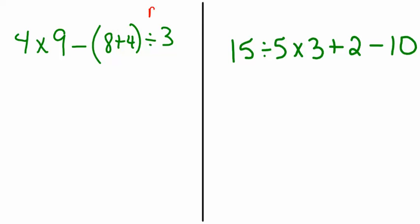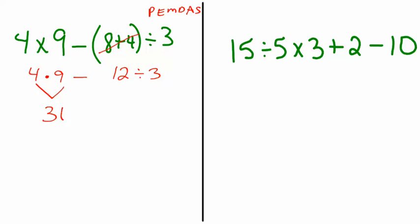Please Excuse My Dear Aunt Sally. Any parentheses? Yes, I have to do the parentheses first — that would be 12. Then I rewrite the problem: four times nine. Any exponents? No. Multiplication or division? Yes, multiplication comes first in the problem. That's 36 minus, and then 12 divided by three would be four. So that would equal 32.